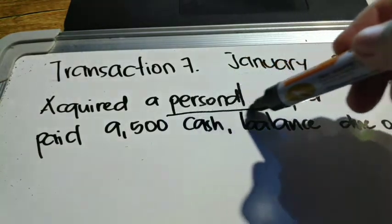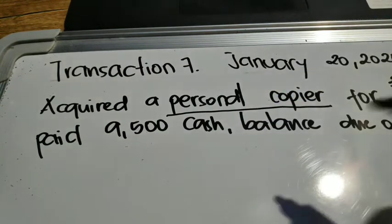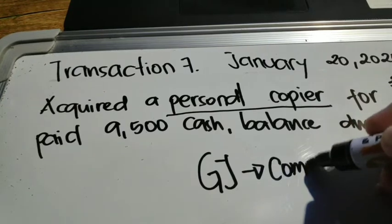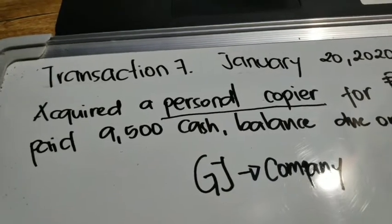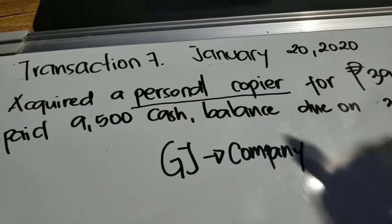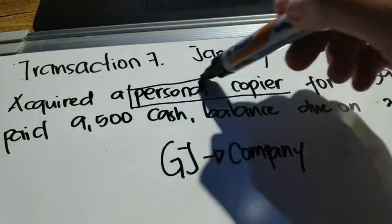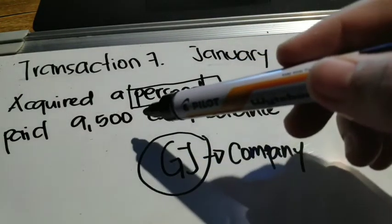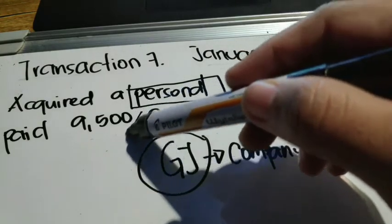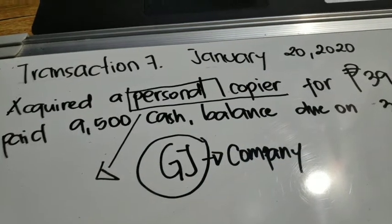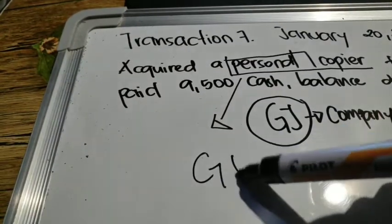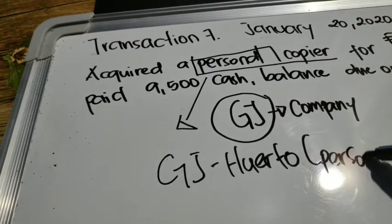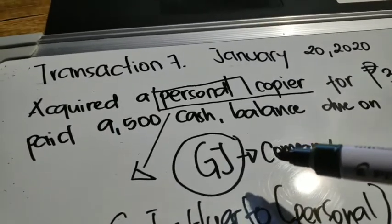As you can see from the problem, you have read 'personal copier.' When you record in the general journal, you are to record transactions only for the company itself. When a transaction is personal, you are not allowed to record it in the company's general journal. If you are the bookkeeper or accountant of the owner — for example, Rosenda Huerto — you would record it in Huerto's personal general journal, not in the company's general journal.